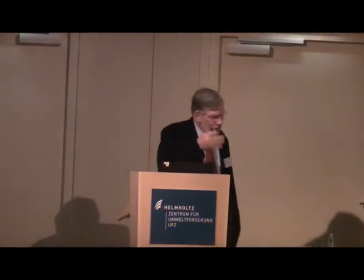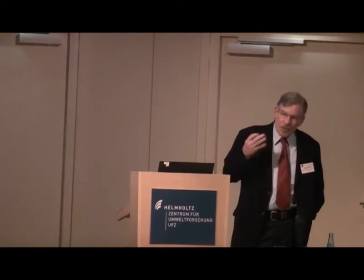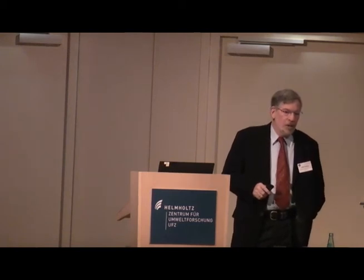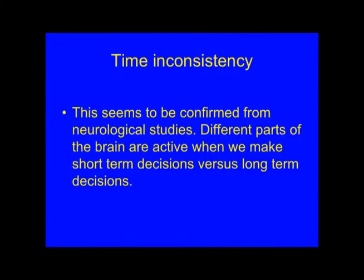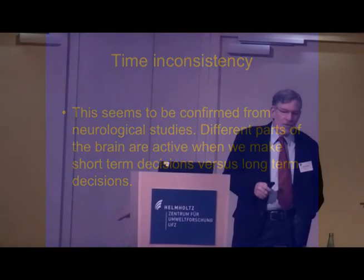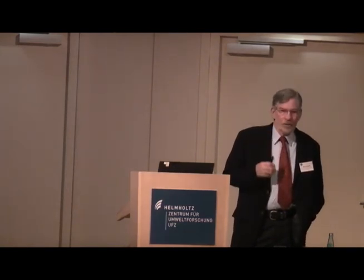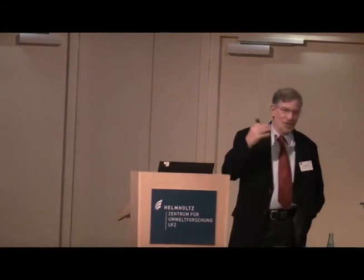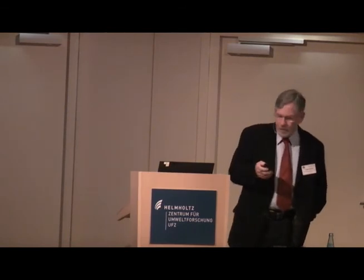This time inconsistency also tends to be confirmed by neurological studies. There's a whole field called neuroeconomics, and it's really valuable in confirming results from behavioral economics — it's sort of a smoking gun. Different parts of the brain are active when we consider long-term decisions as opposed to short-term decisions. It's a way to show that behavioral experiments like the ultimatum game aren't just artifacts of using students or contrived research conditions — there's really something going on in the brain.